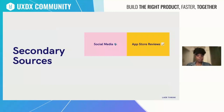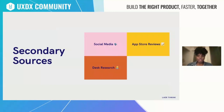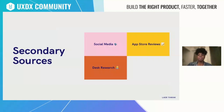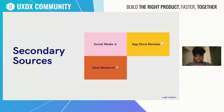A third secondary source is desk research. Desk research is literally getting your Google game on and looking for research from other publications and sources on topics relevant to your product, your features, the customer needs you're trying to solve for, your target audience, and your assumptions. You have companies like Nielsen Norman, MeasuringU, and Baymard Institute, where they publish research on user behavior, best practices, preferences, and benchmarking reports.